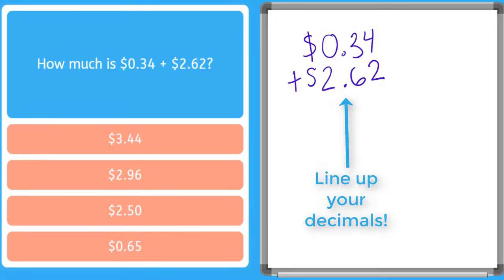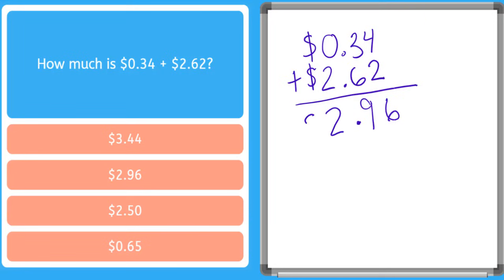So now I'm just adding like normal decimals. Four plus two, I have six. Six plus three gives me nine. I move my decimal point down, and then two plus zero dollars is two dollars. So my total would come to $2.96, which is right there. Nice work!